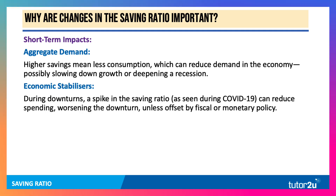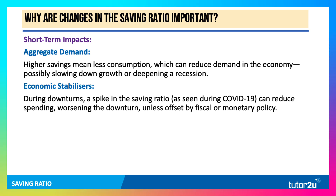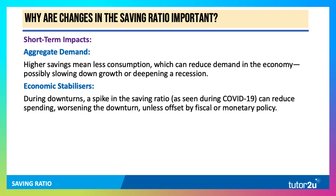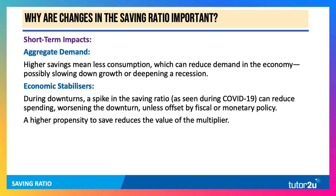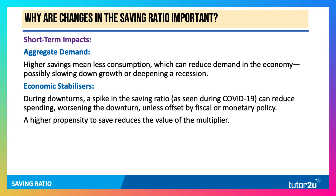Savings can also act as an economic stabiliser. During downturns, a spike in the savings ratio — as we saw in 2020 — can reduce spending further in a downturn, unless it's offset by fiscal and monetary policy. A higher average propensity to save, driven by an increase in the marginal propensity to save, can also reduce the value of the multiplier.